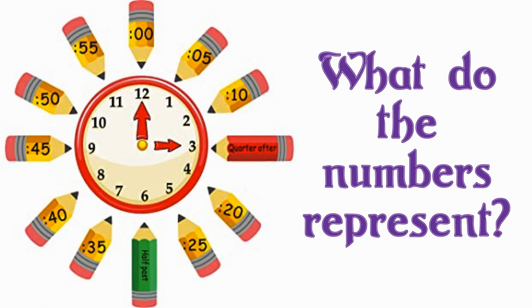Now, if our long hand is pointing on the numbers 1 through 12, to find out our minutes, we count in 5s. Count with me: 5, 10, 15, 20, 25, 30, 35, 40, 45, 50, 55, 60. That's right, boys and girls, we stop at 60. Why? Because there are only 60 minutes in an hour.